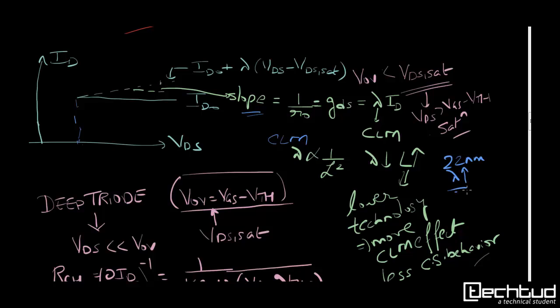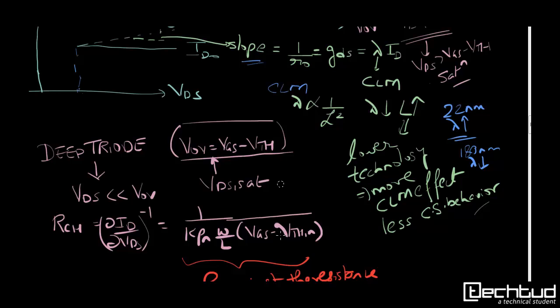In deep triode voltage, in deep triode mode what we see is that VDS we can say it is much much less than overdrive voltage. Overdrive voltage is nothing but VGS-VTH, so VGS-VTH term is also referred to as VDSSAT. The condition VDSSAT is nothing but the condition where the transistor started moving into the saturation region, like constant current source behavior.